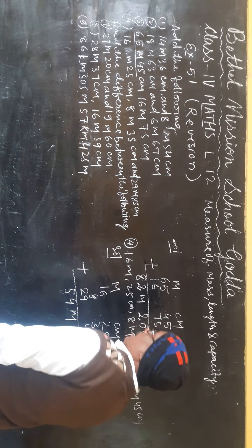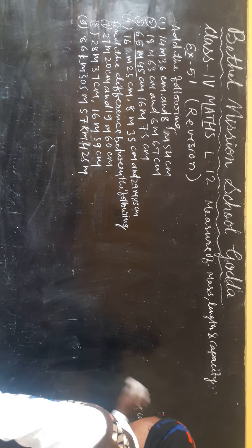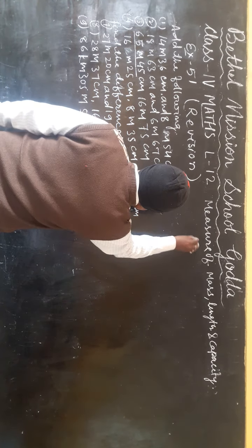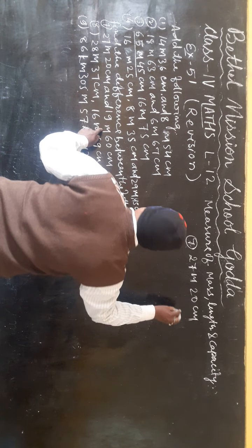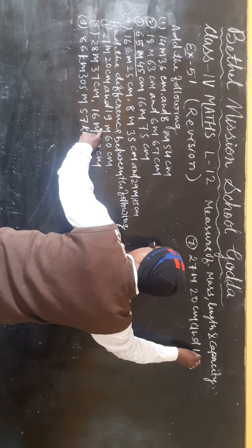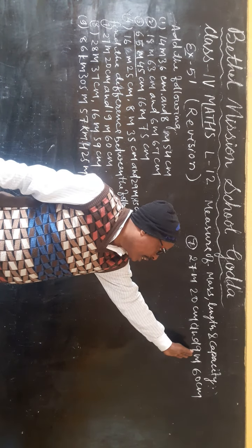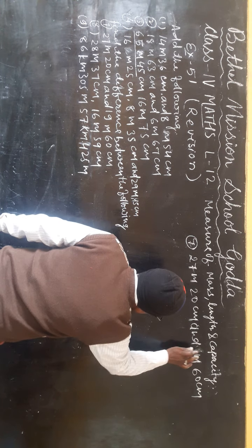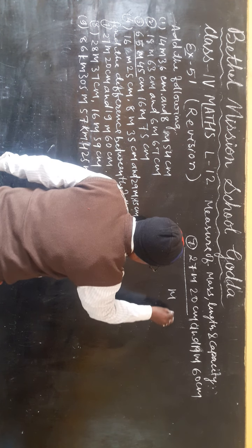Next section: find the difference between the following — difference means subtract. Question seven: 27 meter 20 cm and 19 meter 60 cm. First check which is greater: 27 is greater than 19, so write 27 meter 20 cm on top.